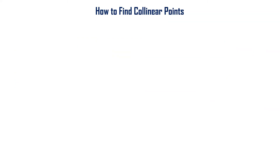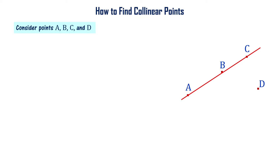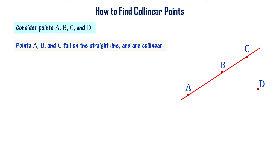Now I have a question: how to find collinear points? Let us consider a few points A, B, C and D. Let me draw a line that passes through A, B, C. A, B, C are falling on a straight line — these are collinear points. Let us consider three point coordinates. If we draw a graph or straight line, we can figure out whether given points are collinear or not.